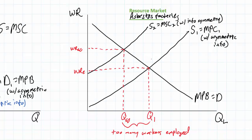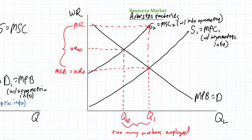We can show the welfare loss resulting from this by going up to the marginal social cost curve from our quantity of Q1. The marginal social cost — MSC — of employing this many workers is much higher than the marginal social benefit. This arises from the asymmetric information experienced when factory owners do not share information about the harmful work environment with their workers. So we have a welfare loss in this market equal to the blue triangle.